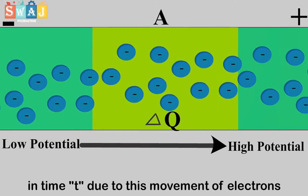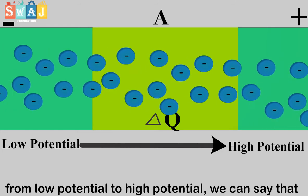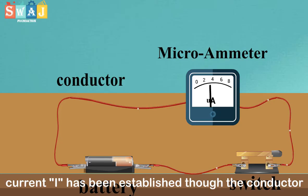Due to this movement of electrons from low potential to high potential, we can say that current I has been established through the conductor.